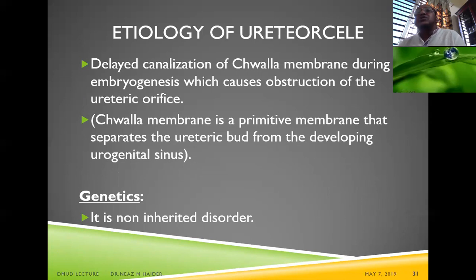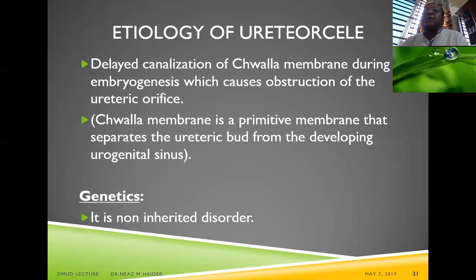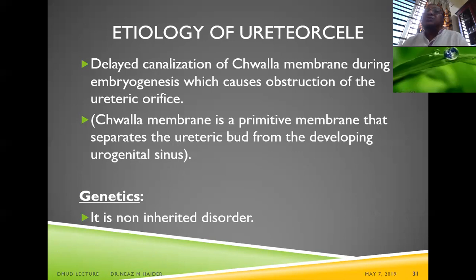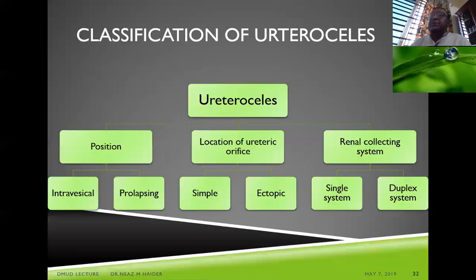Ectopic ureteroceles are four times more common than intravesical ones. The etiology involves failed canalization of the Chwalla membrane during embryogenesis, causing obstruction of the ureteric orifice. The Chwalla membrane is a primitive membrane separating the ureterocele from the developing urogenital sinus, and this is a non-inherited disorder.